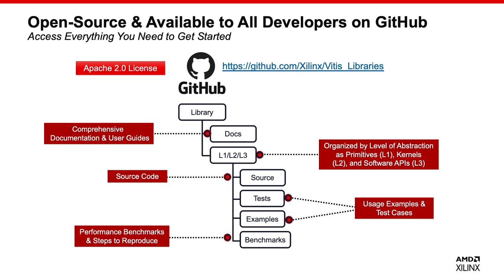You can access everything and download the libraries on GitHub. Libraries are open source under the Apache 2.0 license, which is quite permissive. They are organized using a uniform structure on GitHub. Each library comes with comprehensive documentation with a description of functionality, function parameters required, and individual performance estimates. The source code for library functions is organized into different subfolders based on different levels of abstraction. We also offer examples and test cases required to build and emulate for these libraries. You can access performance benchmarks and the steps to reproduce them. Everything you need to run these libraries is available on GitHub.